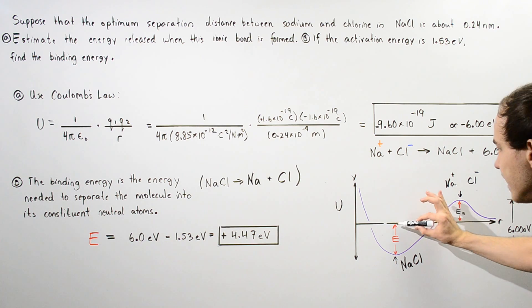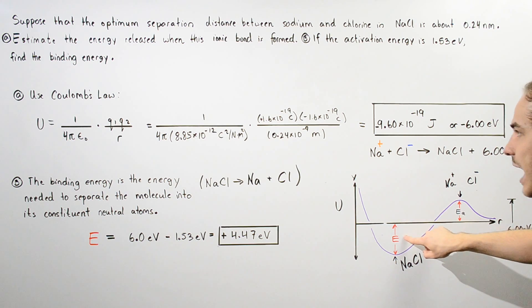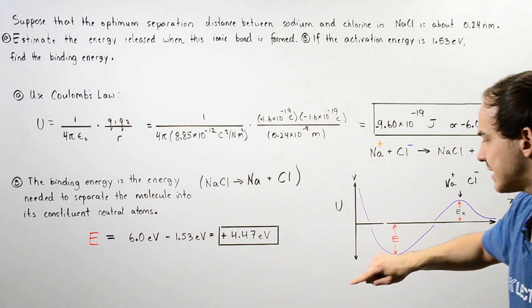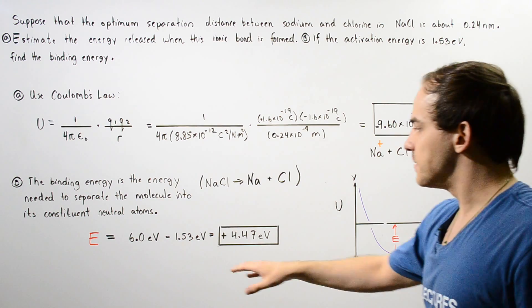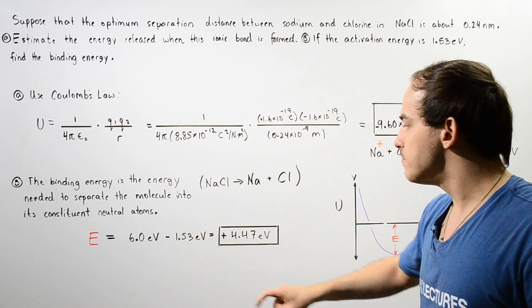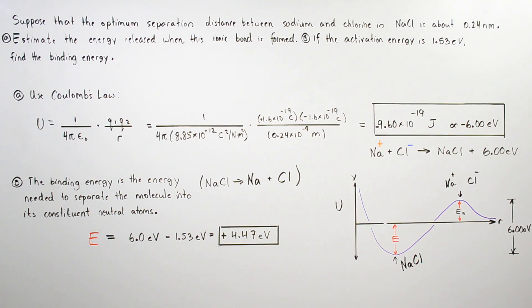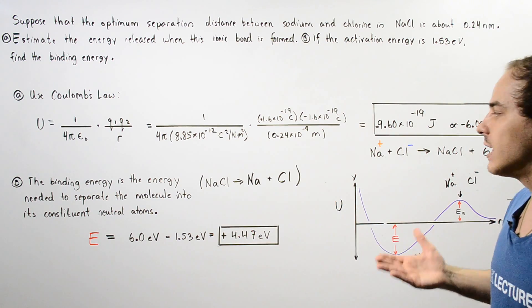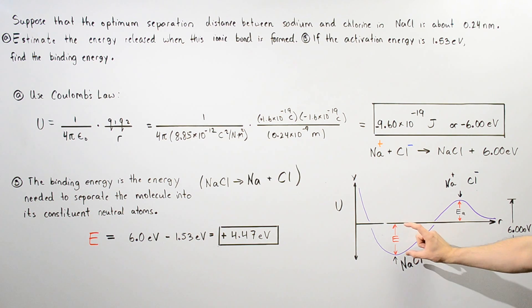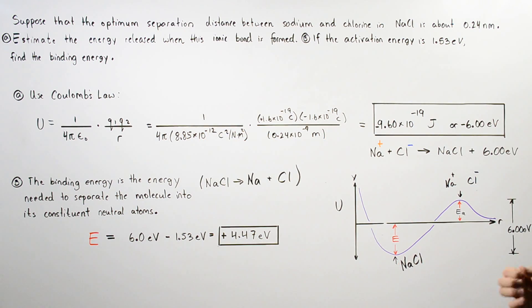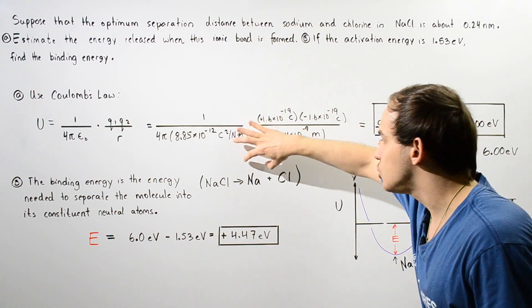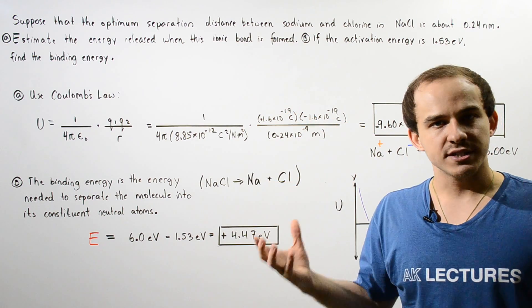To calculate this quantity, which represents our binding energy E, we take six electron volts and subtract the activation energy. So six electron volts minus 1.53 electron volts gives us E equal to positive 4.47 electron volts. This is the amount of energy needed to take our sodium chloride molecule and break it into its constituent atoms in their neutral state.